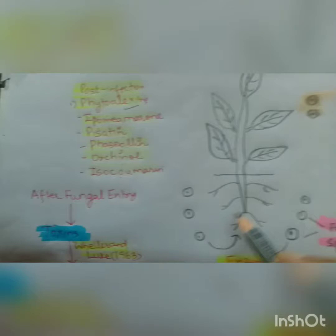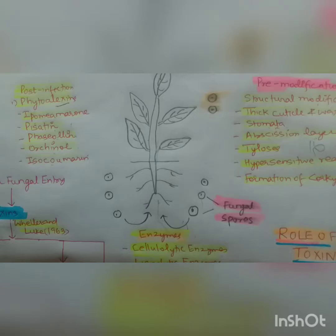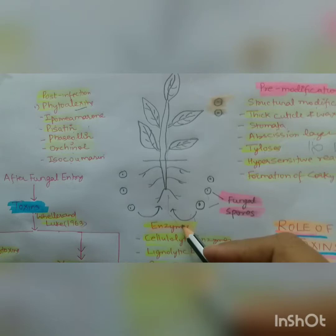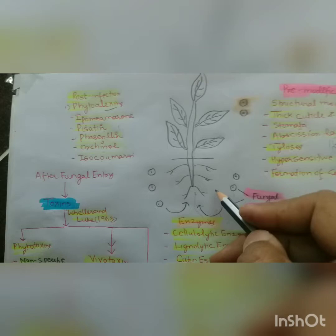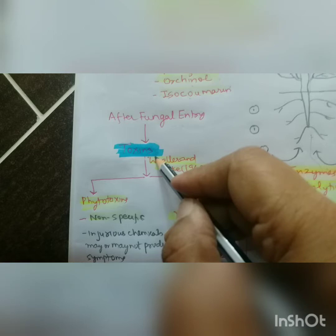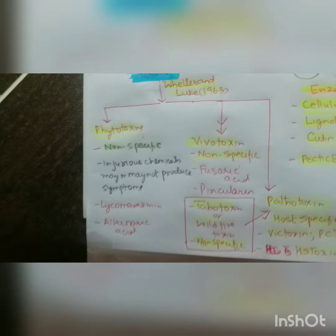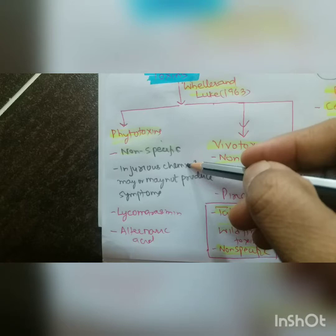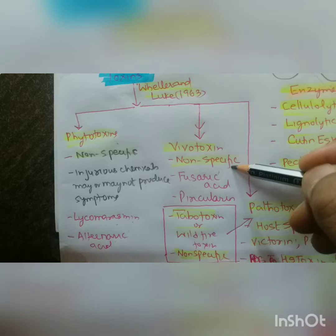Phytoalexins include ipomearon, pisatin, orchinol, and isocoumarins. This is the whole process of host-pathogen interaction. There is a race going on — the fungus wants to enter inside the plant and the plant does not want the fungus. Anyhow, the fungus manages to enter, and after entry it is toxins. According to Wheeler and Luke there are three types: first, phytotoxins.